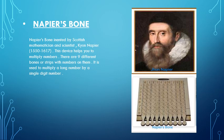Next is Napier's Bones. Napier's Bones was invented by Scottish mathematician and scientist John Napier. This device helps you to multiply numbers. There are nine different bones or strips with numbers on them. It is used to multiply a long number by a single digit number.